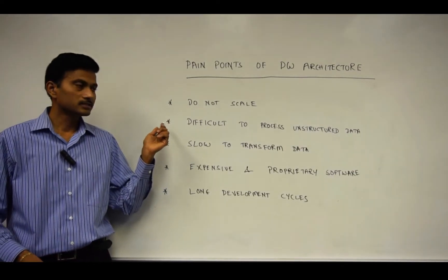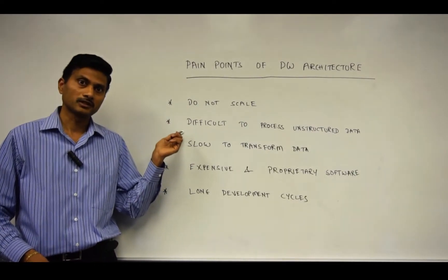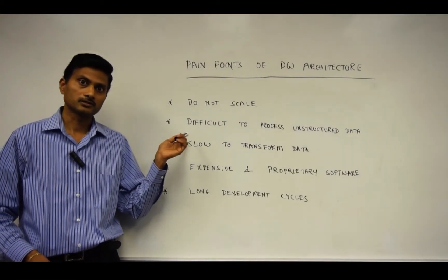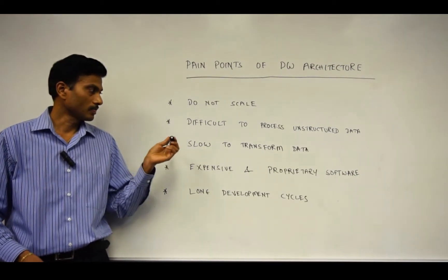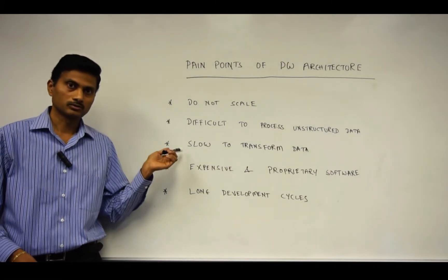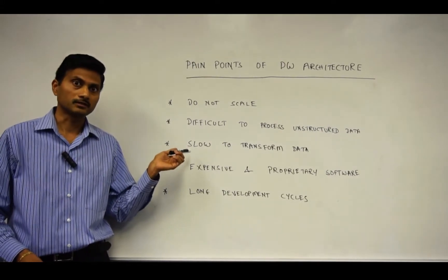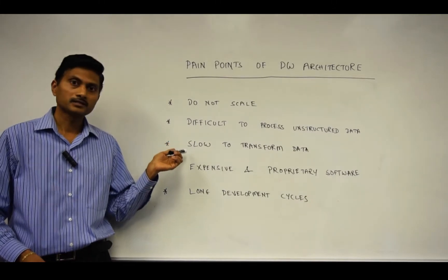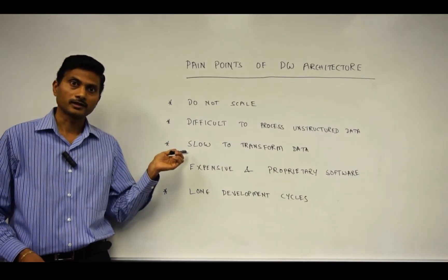Two, it's difficult to process unstructured data with the Data Warehouse architecture we've seen just a while ago. Three, they're slow to transform or process data. So as the data volume increases, the latency for the final data sets is very high.